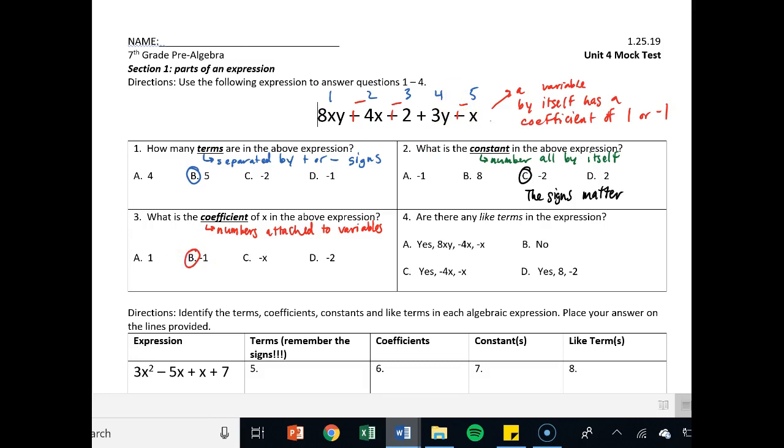Are there any like terms? Like terms are the same variable and same exponent. If you wanted to show work on tomorrow's test, that's how you can do it. So a doesn't make sense because this one's got xy in it. Yes, there are like terms. Yes, negative 4x and negative x. Those are like terms because they both have the variable x and they don't have a coefficient. 8 negative 2? No. This is 8xy. You can't ignore what was attached to it. So C is your answer.